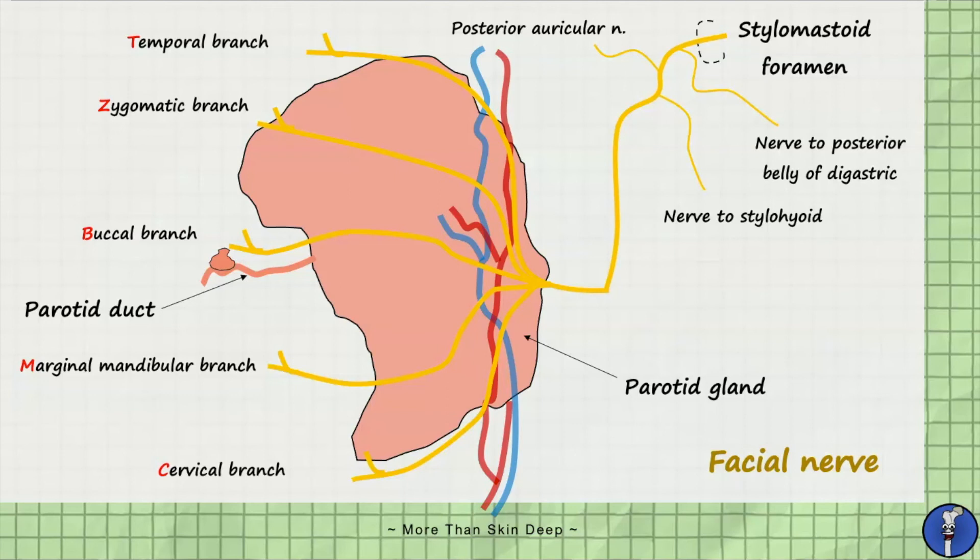Finally, sympathetic supply of the parotid gland originates from the superior cervical ganglion and acts to inhibit saliva production.